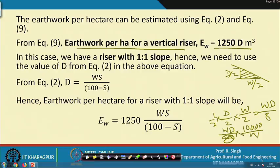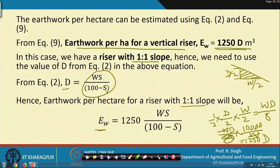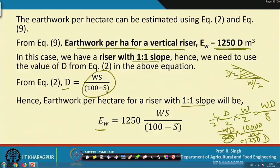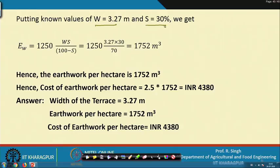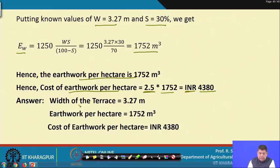Putting the values into the earthwork formula for riser slope 1 is to 1, with W = d(100 − S)/S, the earthwork comes out to be 1752 cubic meters per hectare. The cost of earthwork per hectare, with unit cost of 2.5 rupees per cubic meter, comes out to be Indian rupees 4380. So the answers are: width of terrace is 3.27 meters, earthwork per hectare is 1752 cubic meters, and cost is Indian rupees 4380.